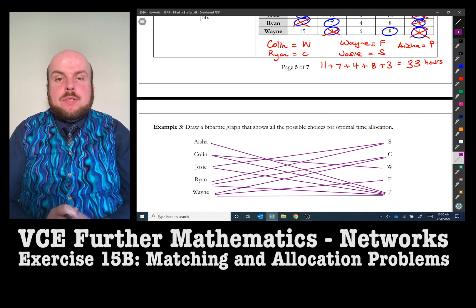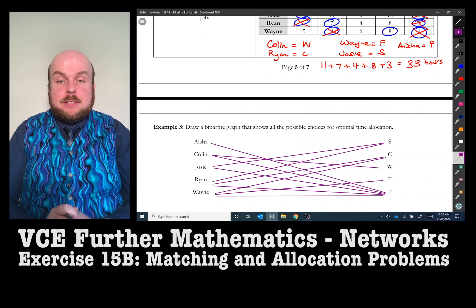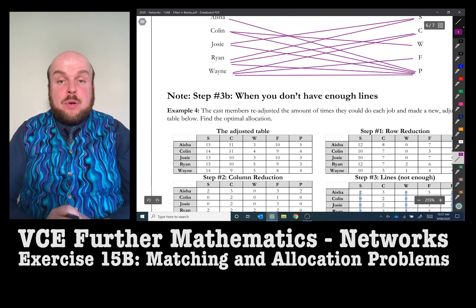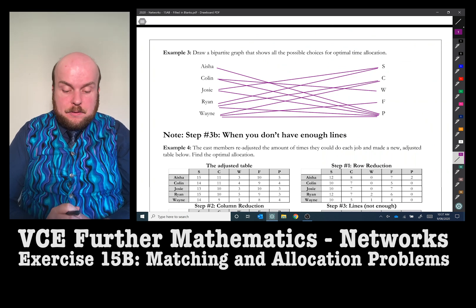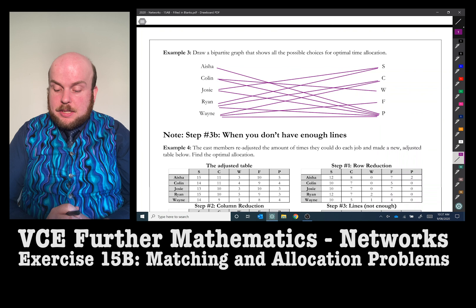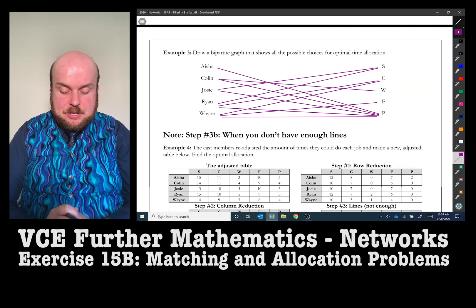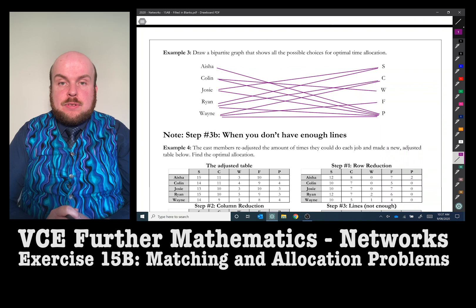And so now we have drawn the bipartite graph. And now what we're going to do is we're going to see the situation if I couldn't draw enough lines in the Hungarian algorithm. So to do this, I've adjusted the number of hours that each person can do each job. So let's just say we were doing the same example before, but we didn't have enough lines. And to do so, what I've done here is example four. The cast members readjusted the amount of times they could do each job and made a new adjusted table below. And we'll need to find the optimal allocation. So all the hours have changed. So what I'm going to do is I'm going to do the exact same procedure as I did before. I'm going to do a row reduction, column reduction, etc. So that we can see what needs to be done.